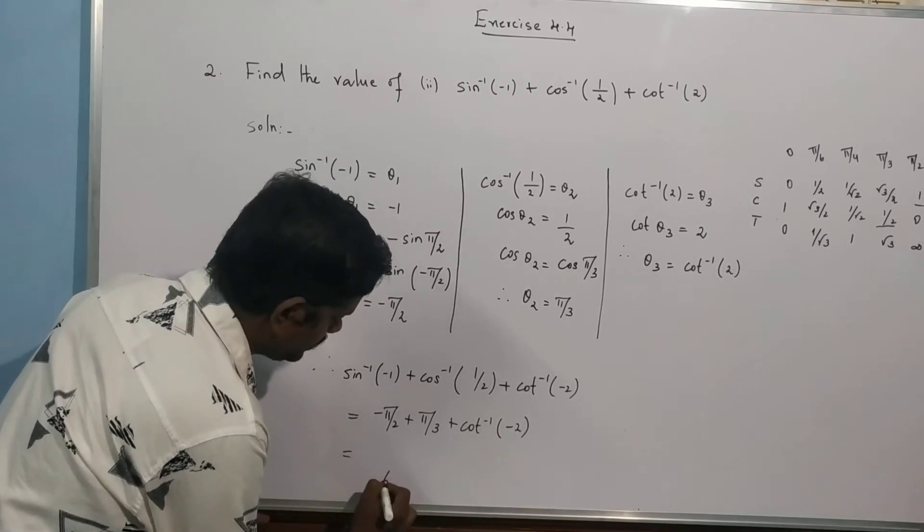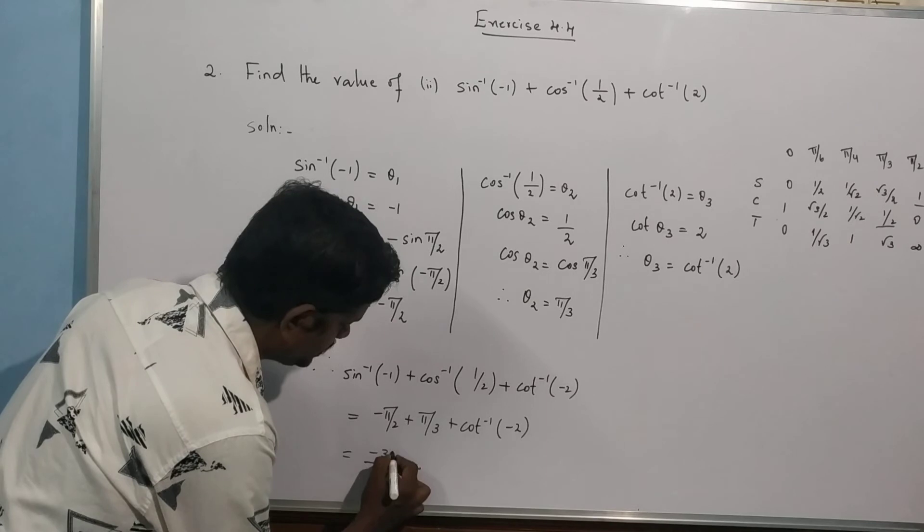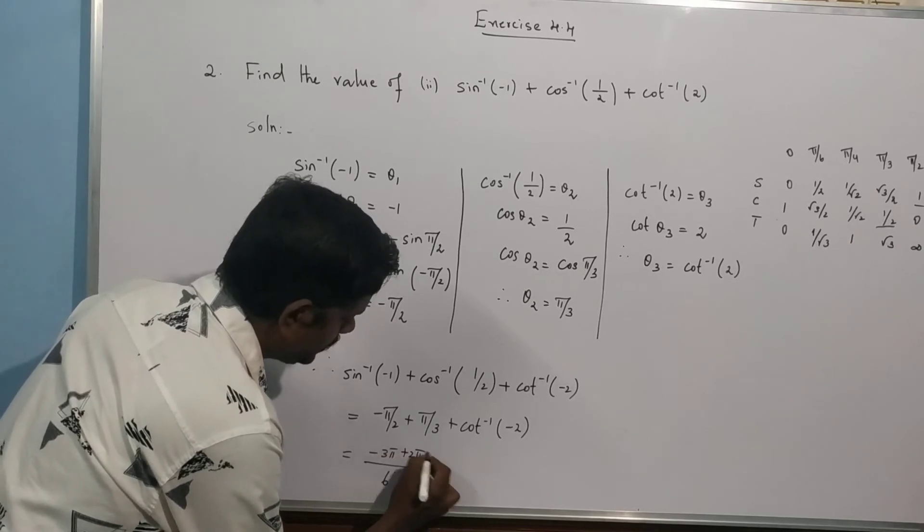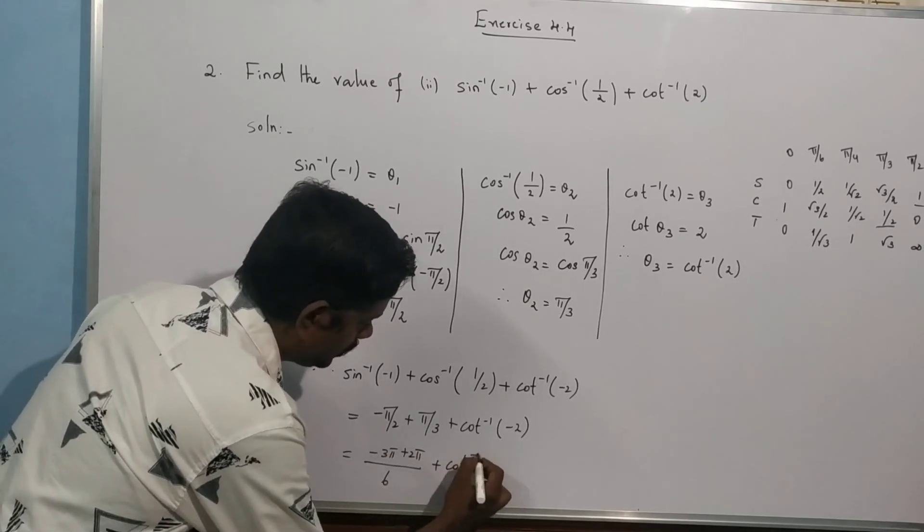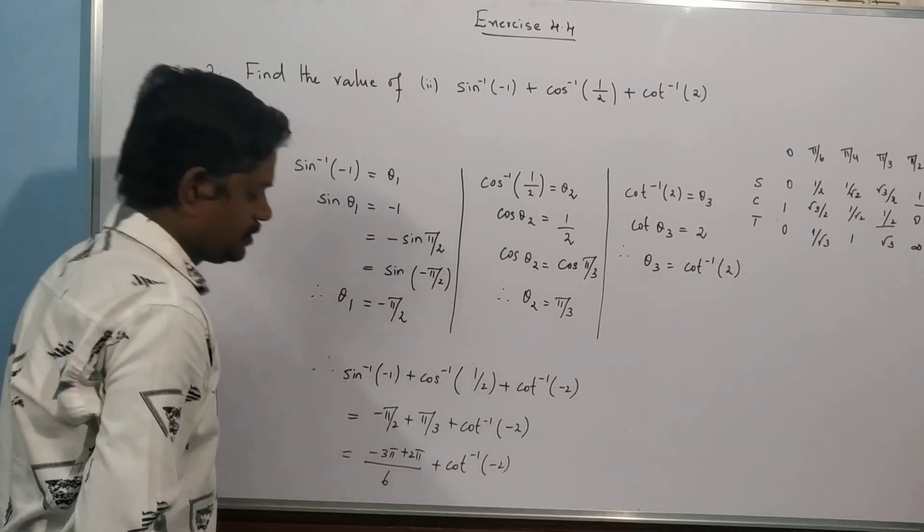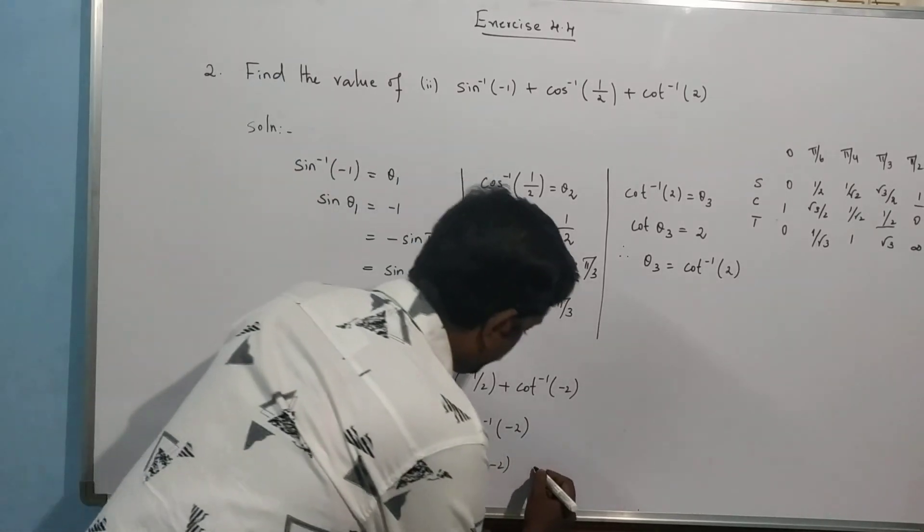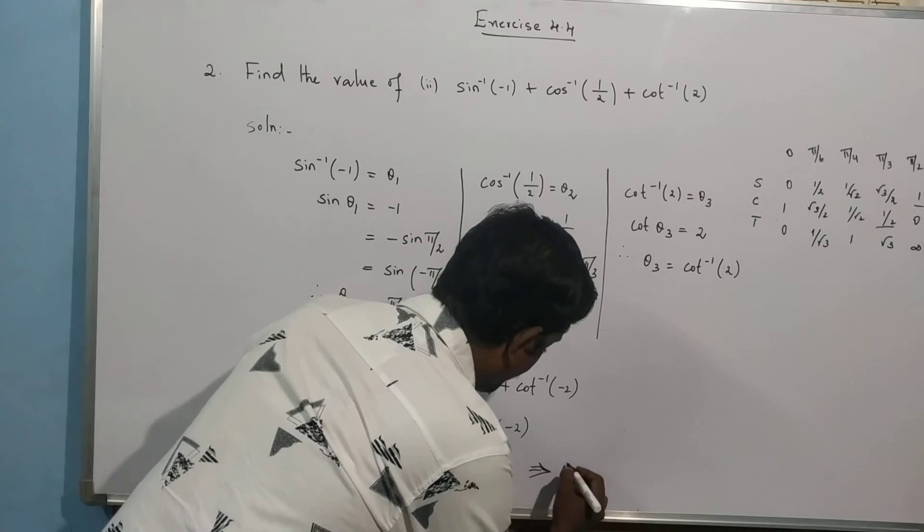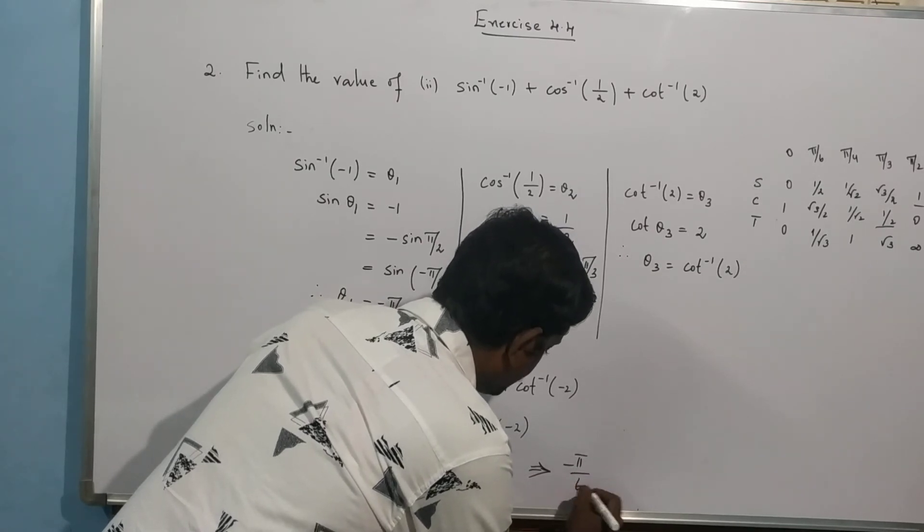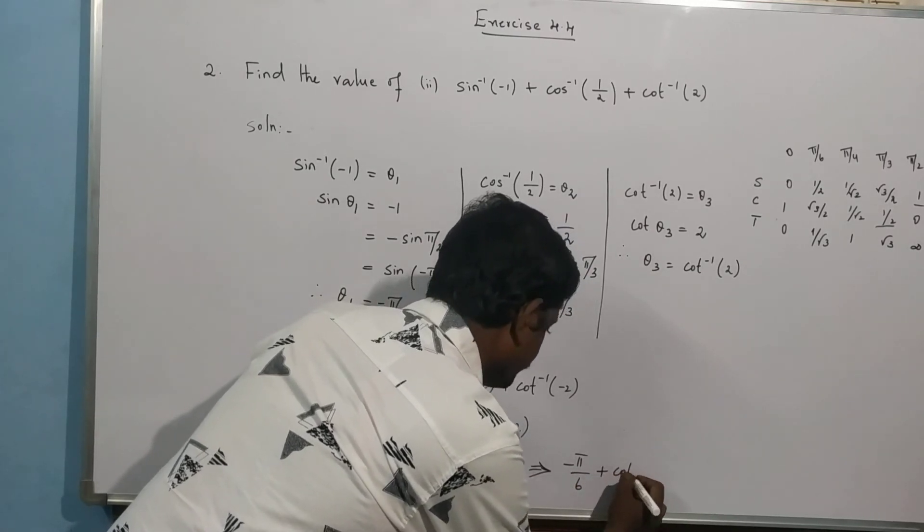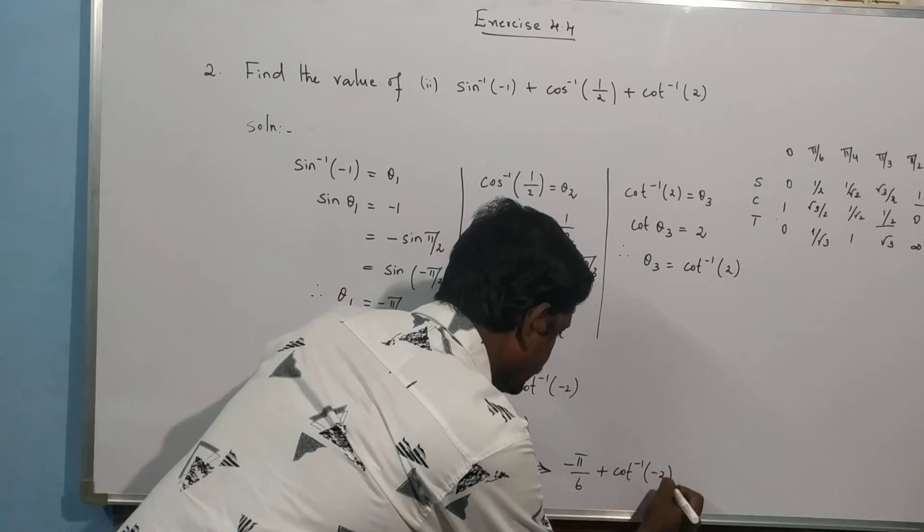This is LCM 6. So, 3 times minus 3 pi, plus 2 pi, plus cot inverse of minus 2. Minus 3 pi plus 2 pi. Minus 5 pi by 6 plus cot inverse of minus 2. This is your answer.